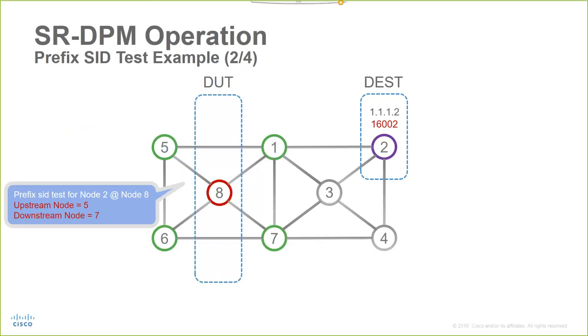Now, the prefix seed test continues. In the second iteration, the node verifies the LSP to router number 2 using again router number 5 as upstream, but now router number 7 as downstream.